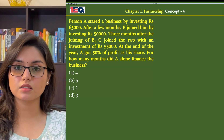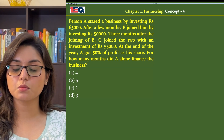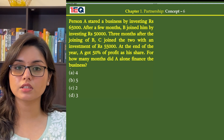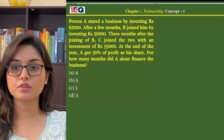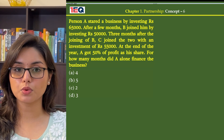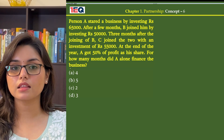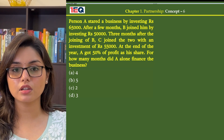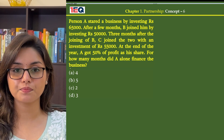Person A started a business by investing Rs 65,000. After a few months, B joined him by investing Rs 50,000. Three months after the joining of B, C joined the two with an investment of Rs 55,000. At the end of the year, A got 50% of the profit as his share.